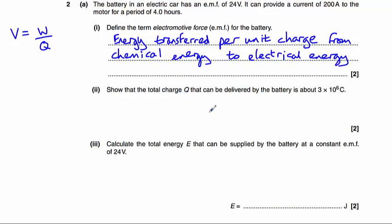Now part two says show that the total charge Q that can be delivered by the battery is about 3 times 10 to the 6 coulombs. So let's look back at our question here. We know the EMF is 24 volts. We know the current is 200 amps. And we know a time period here is 4 hours.